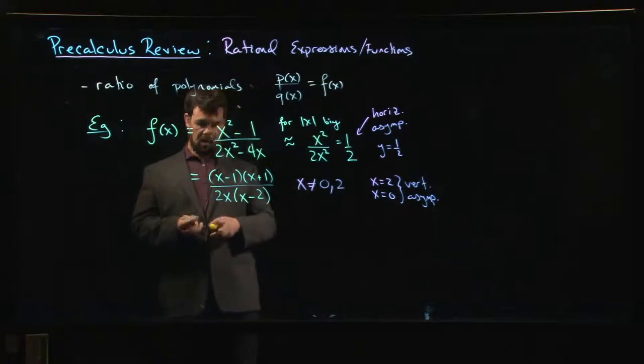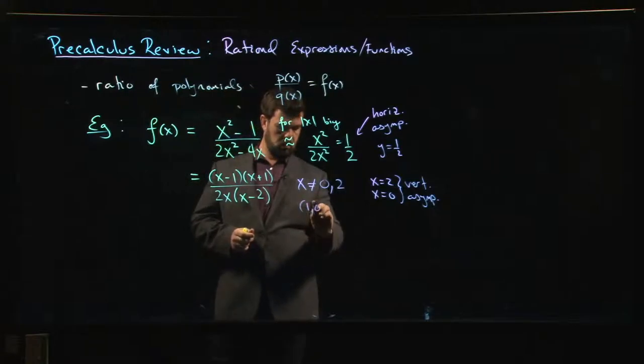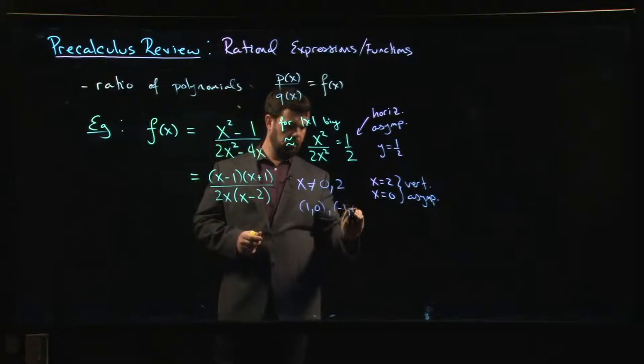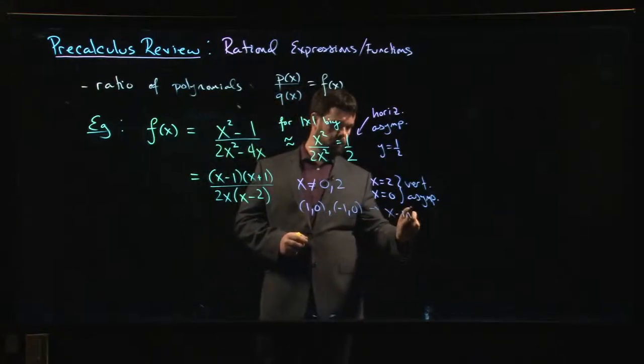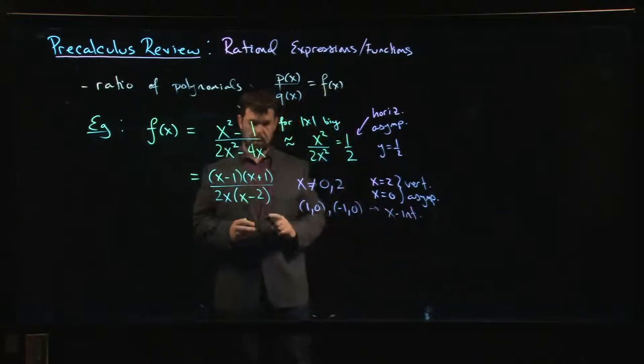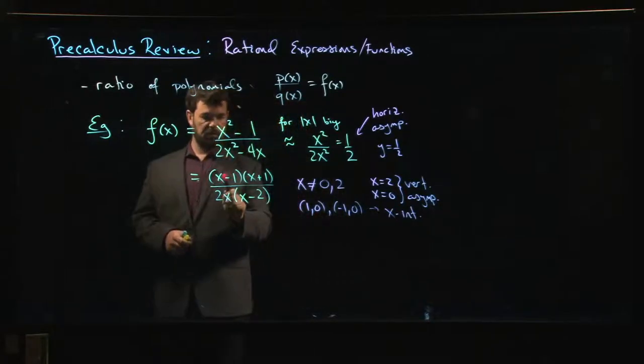We also know that 1,0 and minus 1,0, these are x-intercepts. Those are places where the graph is going to cross the x-axis because if x is plus or minus 1, y is going to be 0.